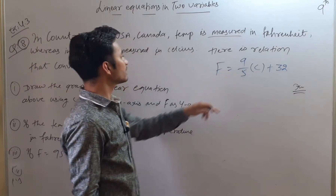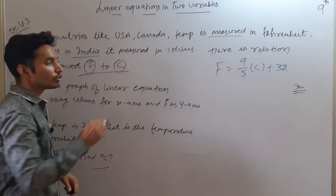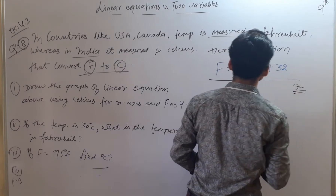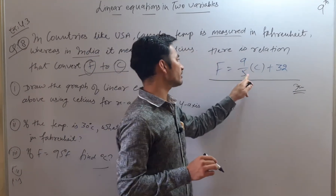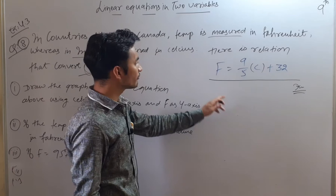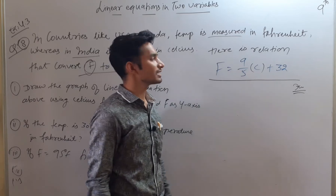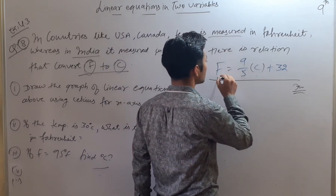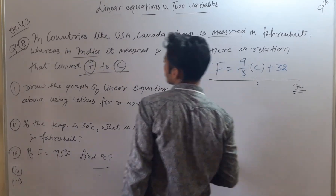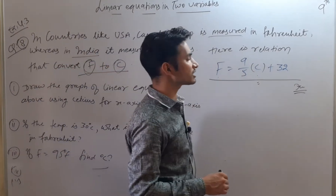Here is the relation that converts Fahrenheit to degree Celsius. If we want to find the degree Celsius, we should know the Fahrenheit. One of the units will be known to us. The question concerns the measurement of temperature in Fahrenheit in countries like USA and Canada.